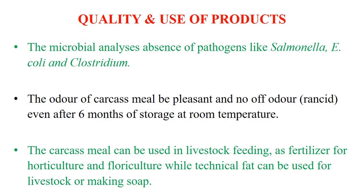Here we will briefly discuss the quality and use of products. For microbial analysis, there should be total absence of pathogens like Salmonella, E. coli, or Clostridium. The carcass meal should have a pleasant odor and should not show any rancidity even after 6 months of storage at room temperature. Carcass meal is used in livestock feeding, especially poultry and pigs, or as fertilizer in horticulture or floriculture. Technical fat such as lard or tallow can be used again in livestock rations or in the soap industry for making soap, candles, and wax.